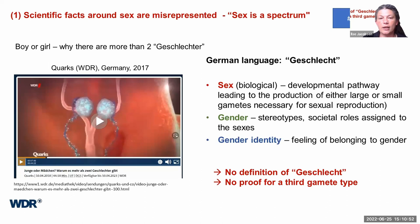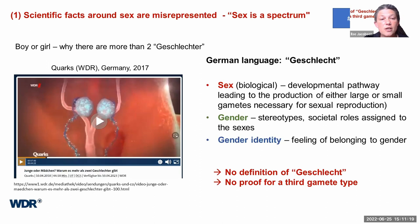Geschlecht can mean sex in the biological way. When I refer to biological sex, I mean the definition about developmental pathways leading to the production of either large or small gametes, which are necessary for sexual reproduction. However, Geschlecht in German could also be used to refer to gender — stereotypes or societal roles assigned to the sexes — or gender identity. The first problem with this example is that they don't define what they mean with Geschlecht.